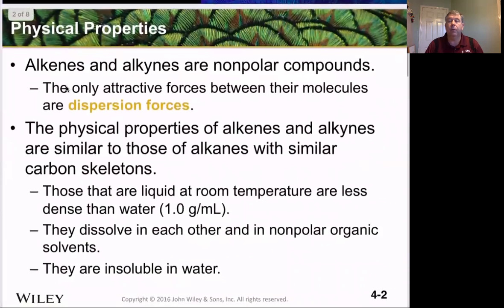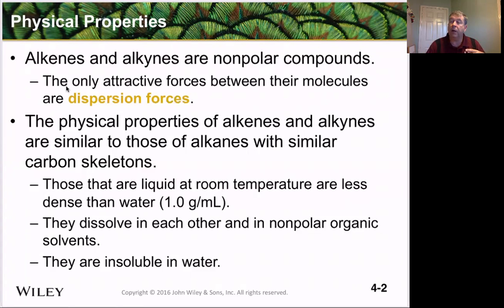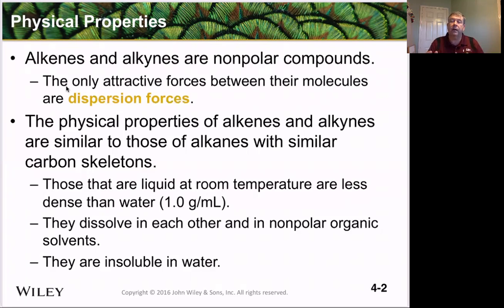As we learned before, we can now name them. We see that they have isomerization and we see that they have sp2 hybridized carbons. But what we also know is that they are non-polar compounds. The carbon-hydrogen bond and carbon-carbon bonds tend to be fairly non-polar. As such, they only have weak attractive forces between their molecules, called dispersion forces. Therefore, the physical properties of alkenes and alkynes are similar in that it's all about the number of carbons they have and whether or not they're branched.